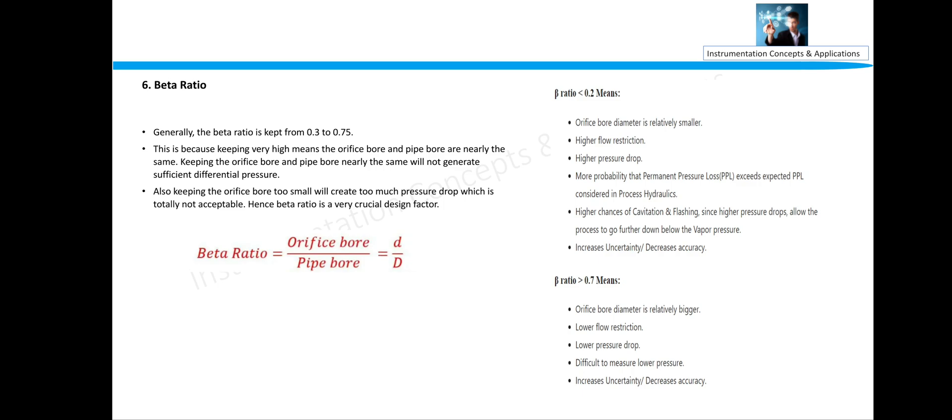And if beta ratio is greater than 0.7, then orifice bore diameter is relatively bigger, lower flow restriction, lower pressure drop, difficult to measure lower pressure, and increase uncertainty. So we should maintain the beta ratio between 0.2 and 0.7.